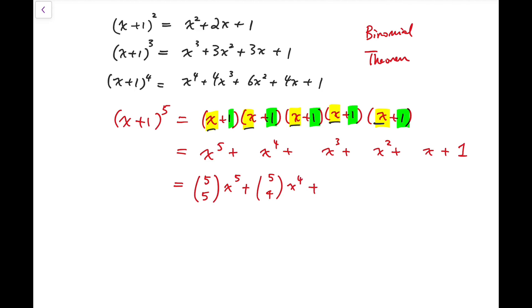So using a similar argument, we'll have the expansion to be these two terms added by 5 choose 3 times x cubed plus 5 choose 2 times x squared plus 5 choose 1 times x plus 5 choose 0.